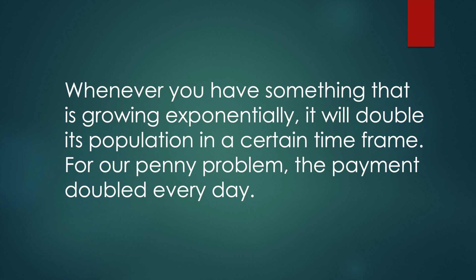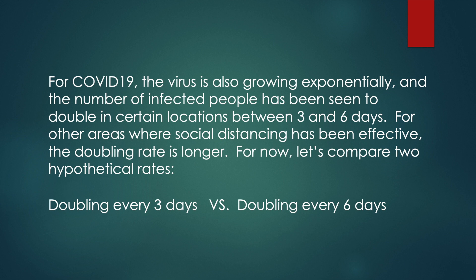Whenever you have something growing exponentially, it will double its population in a certain time frame. For the penny problem, the payment doubled every day. For COVID-19, the virus is also growing exponentially, and the number of infected people has been seen to double in certain locations between 3 and 6 days. For other areas where social distancing has been effective, the doubling rate is even longer.